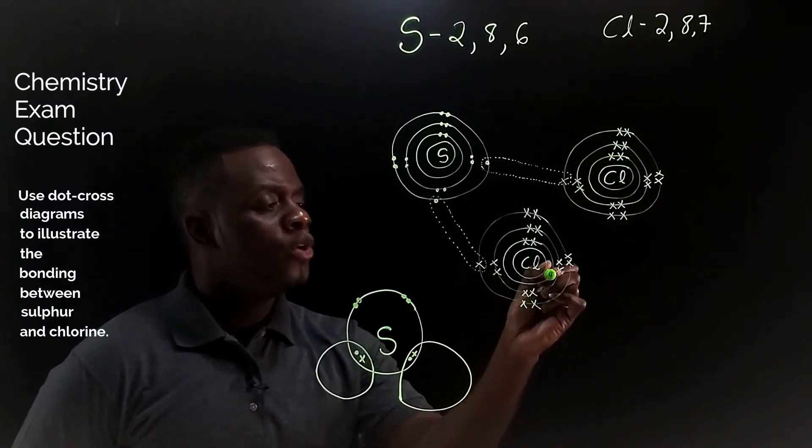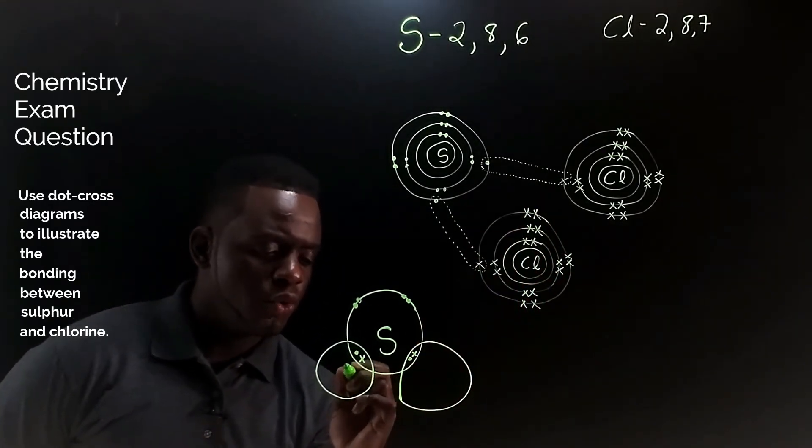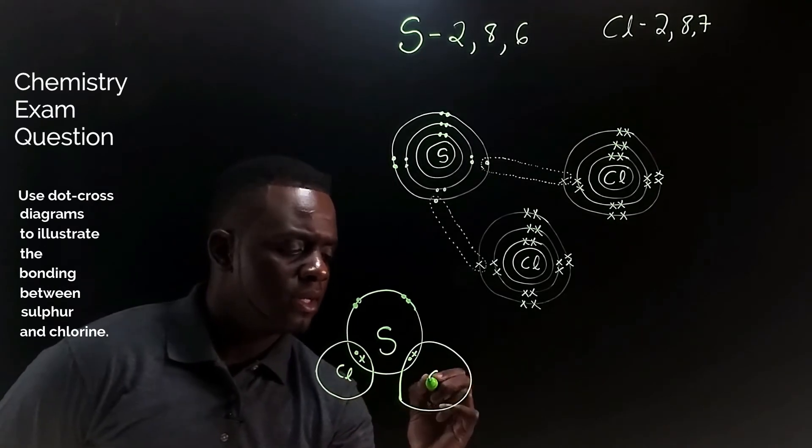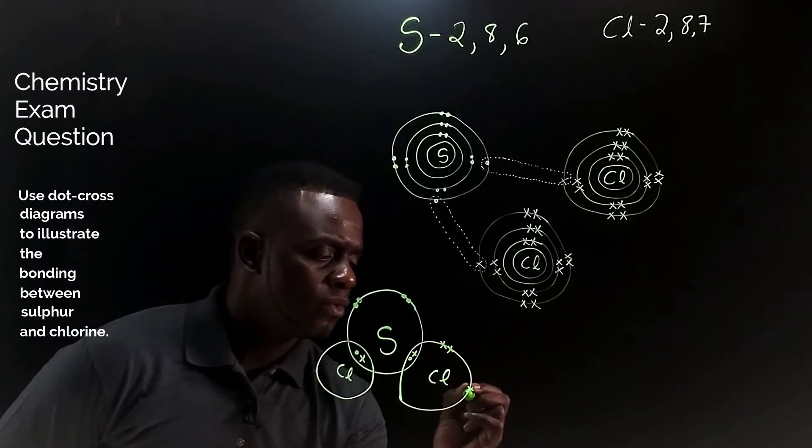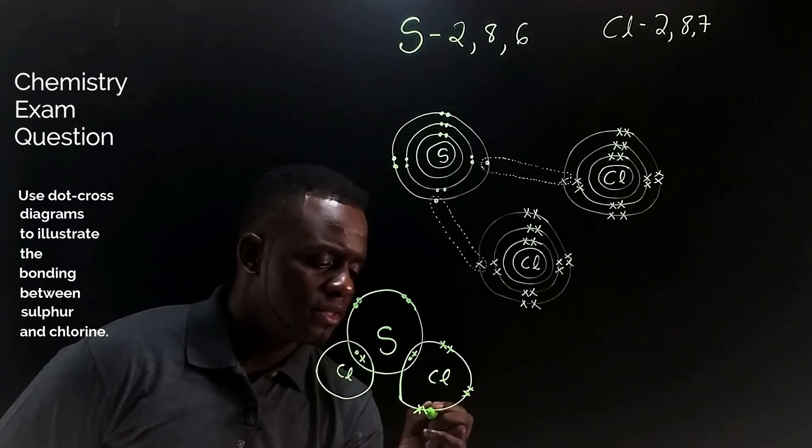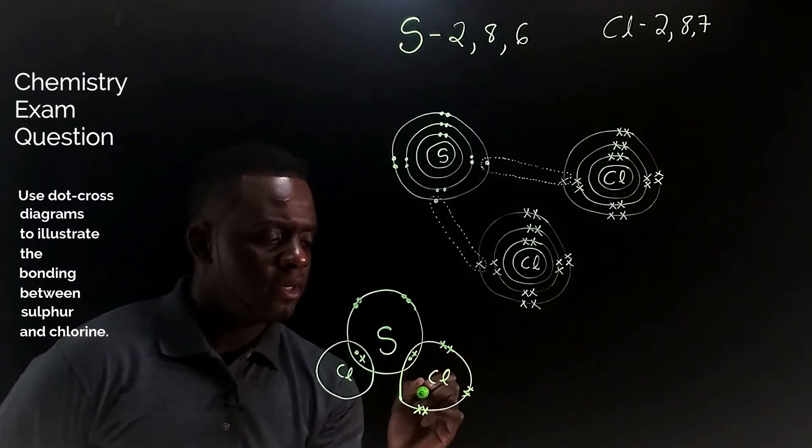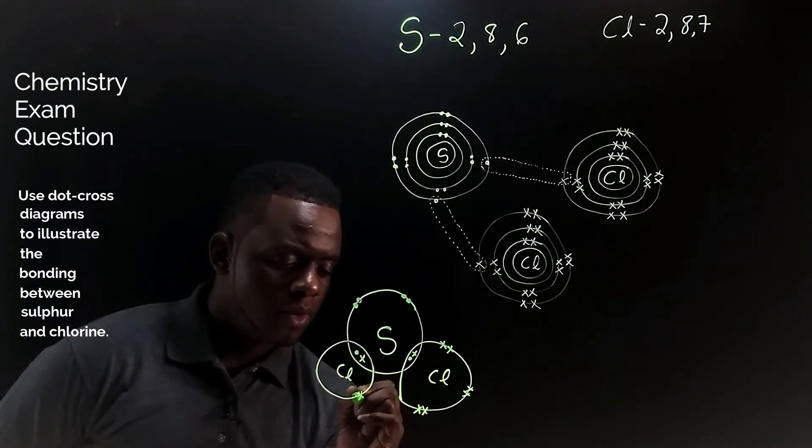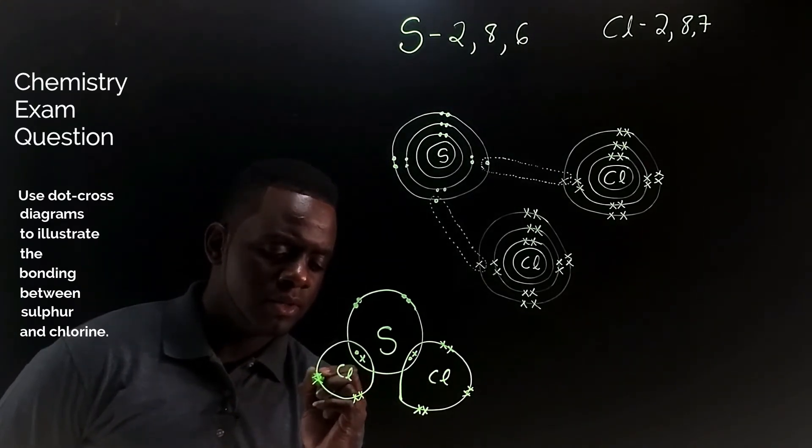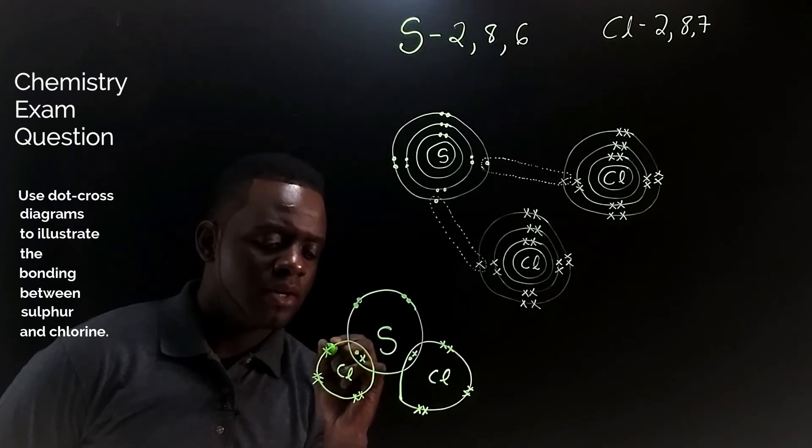Then I'll put the lone pairs of electrons on each chlorine. That is the third lone pair on the chlorine atom over here. And then this one completes the diagram with three lone pairs on each chlorine.